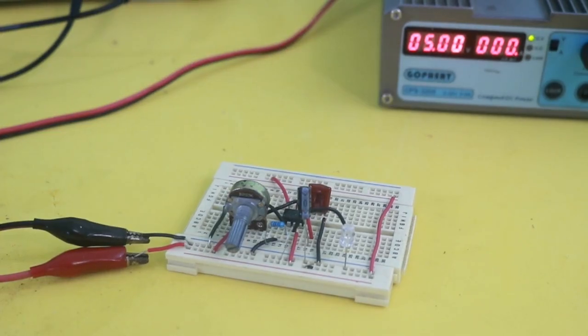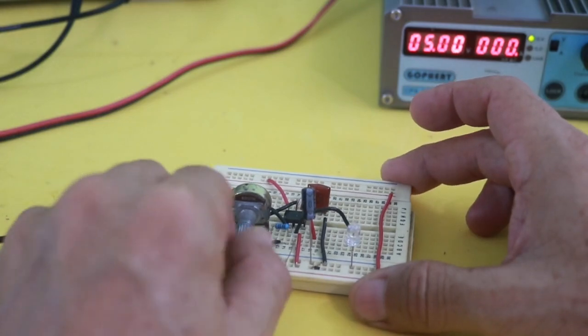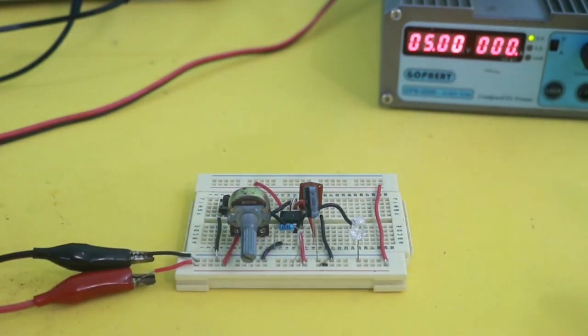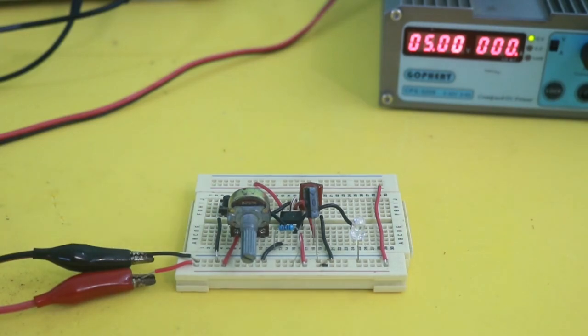So let's try the circuit. I will put the potentiometer here at a minimum. That means that the time will also be short and the power supply is on at 5 volts.